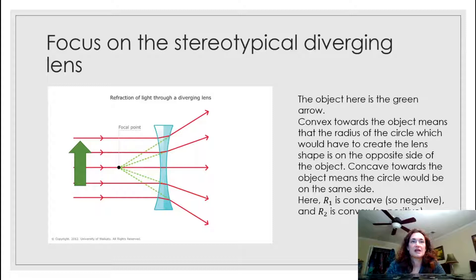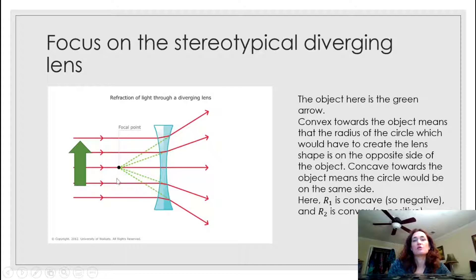What I've got here is an image of a diverging lens, and the object would be this green arrow. I want to talk about the lens maker's equation that we just introduced and some of the conventions, then solve for what the focal length would be for a diverging lens that has the stereotypical look.